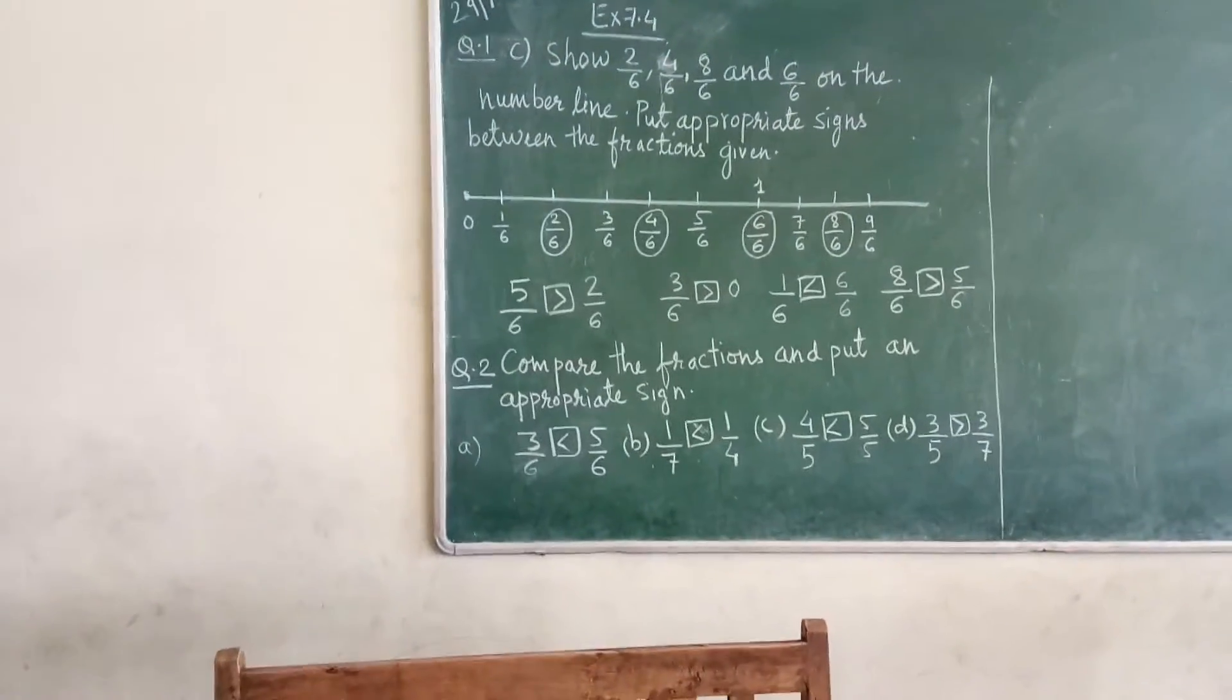In question number 2, what you have to do? Compare the fractions and put an appropriate sign. So some tricks, if you remember, it will be very easy for you to put the sign. Now you can see first part, part A, 3 upon 6 and 5 upon 6.